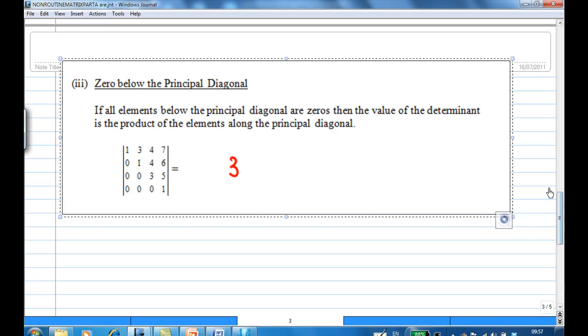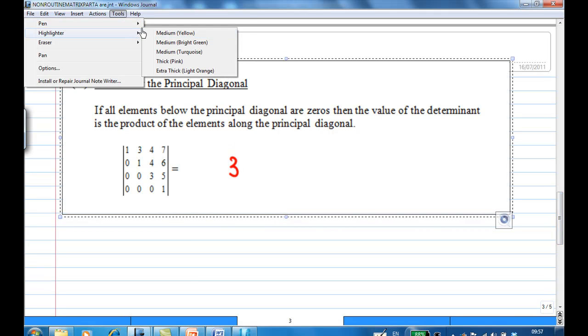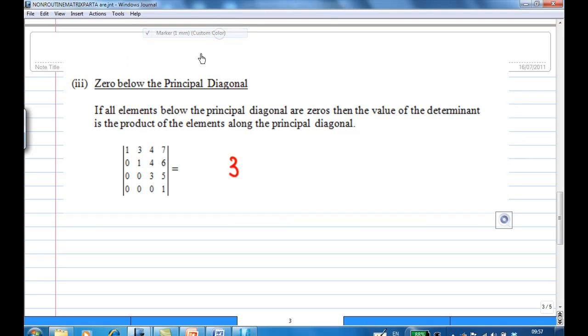We have a property that says if all elements below or above the principal diagonal are zero, then the value of the determinant is the product of elements along the principal diagonal.